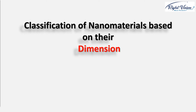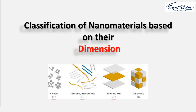Classification of material based on their dimension leads to the introduction of nanostructures like quantum dots, nanowires, and nanotubes. It's based on the fact how many dimensions of a nanomaterial stand at the nanoscale.